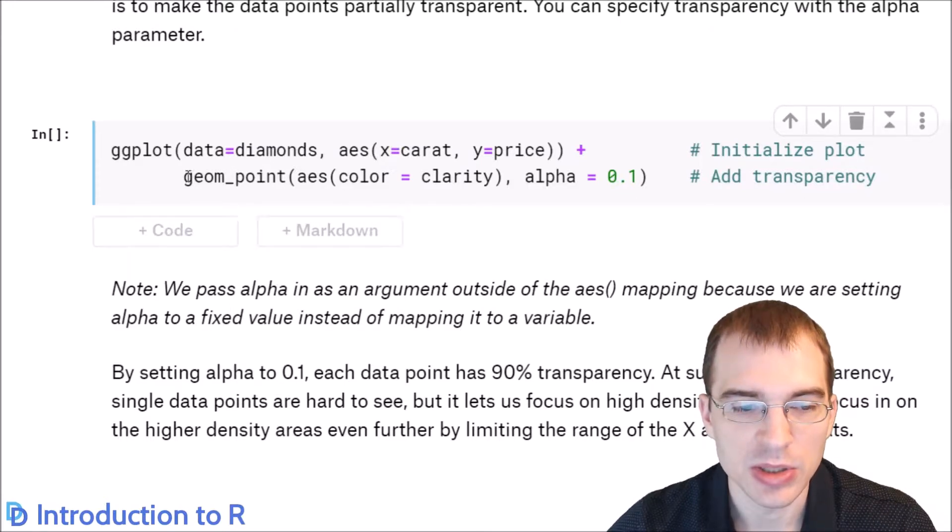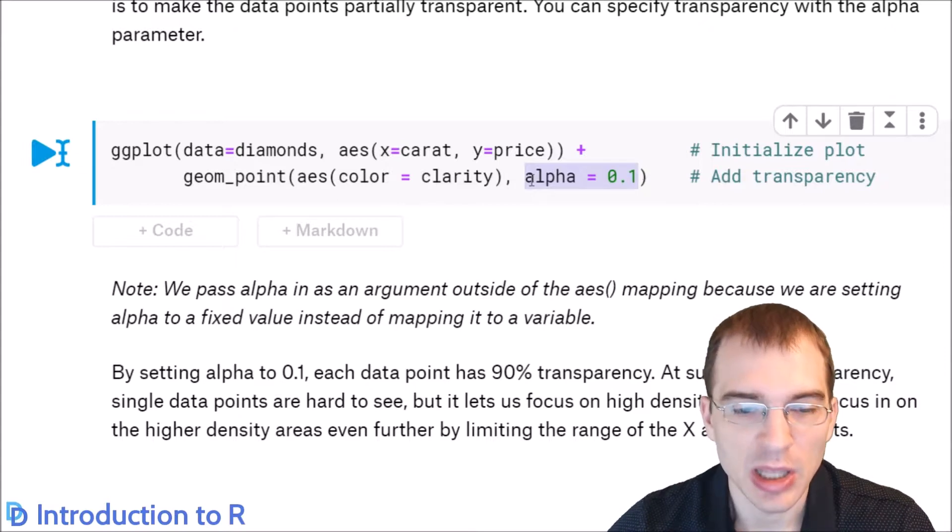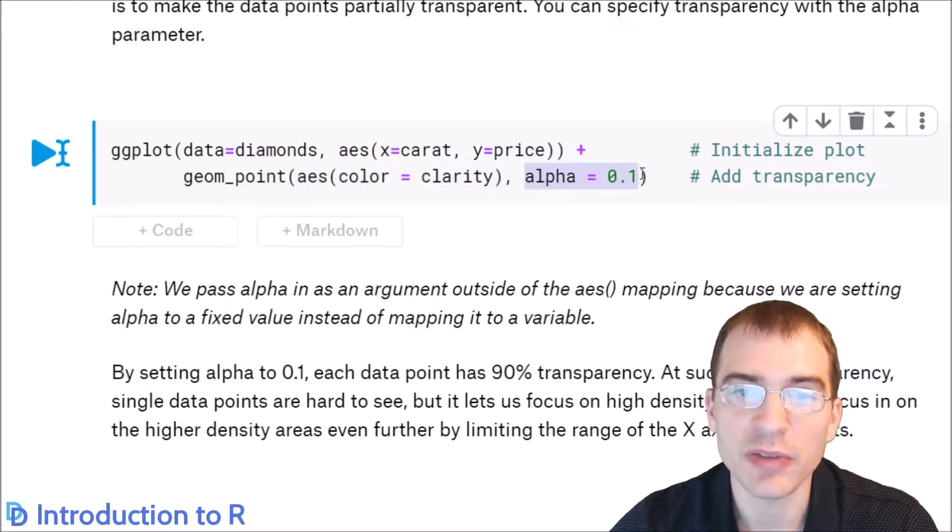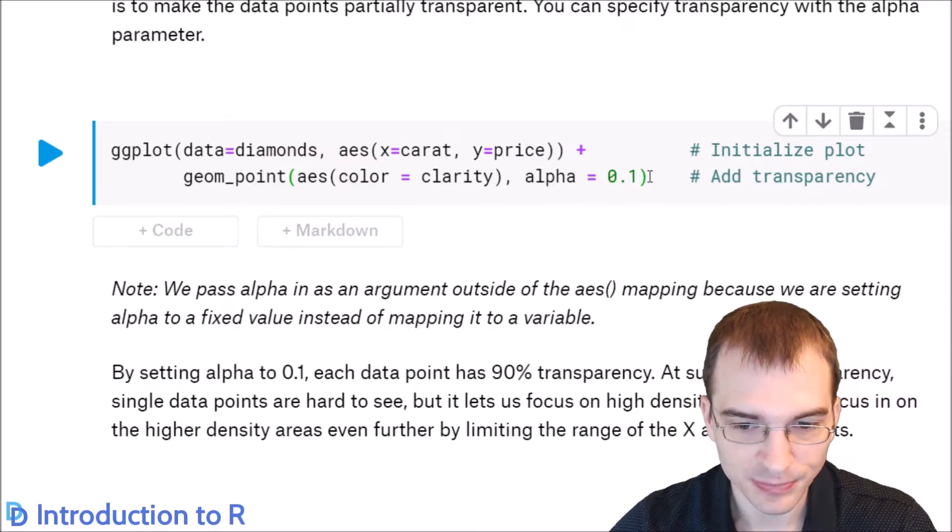When you pass in something that's affecting all points and isn't based on the actual data values, you want to pass those things outside of the aesthetic mappings. We're calling the same function and geom, but we're passing alpha equals 0.1, which will add a 90% transparency. This comes outside of the aesthetic mapping because the alpha doesn't actually have anything to do with the values of the data. We're just saying we want every single point to be transparent. The alpha is just applied uniformly to everything, so that comes outside of the aesthetic mapping here.